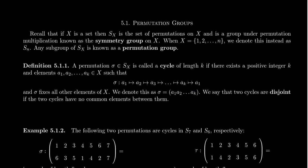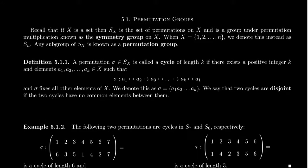So we say that two cycles, which cycles are permutations, we say that two cycles are disjoint if the two cycles have no elements in common. So let's look at some examples of cycles right here.